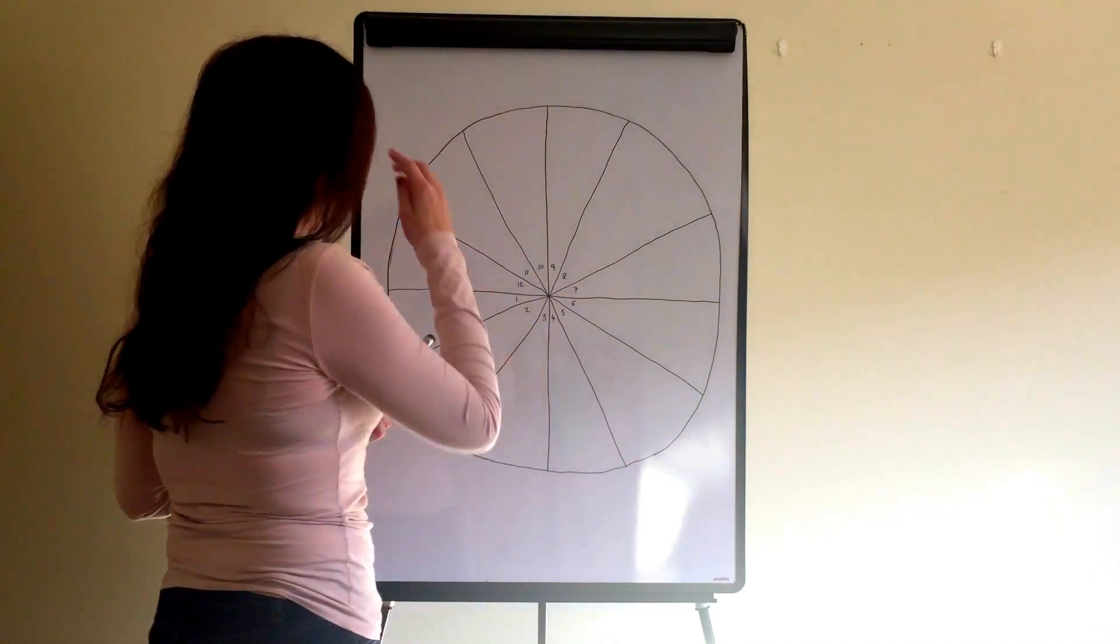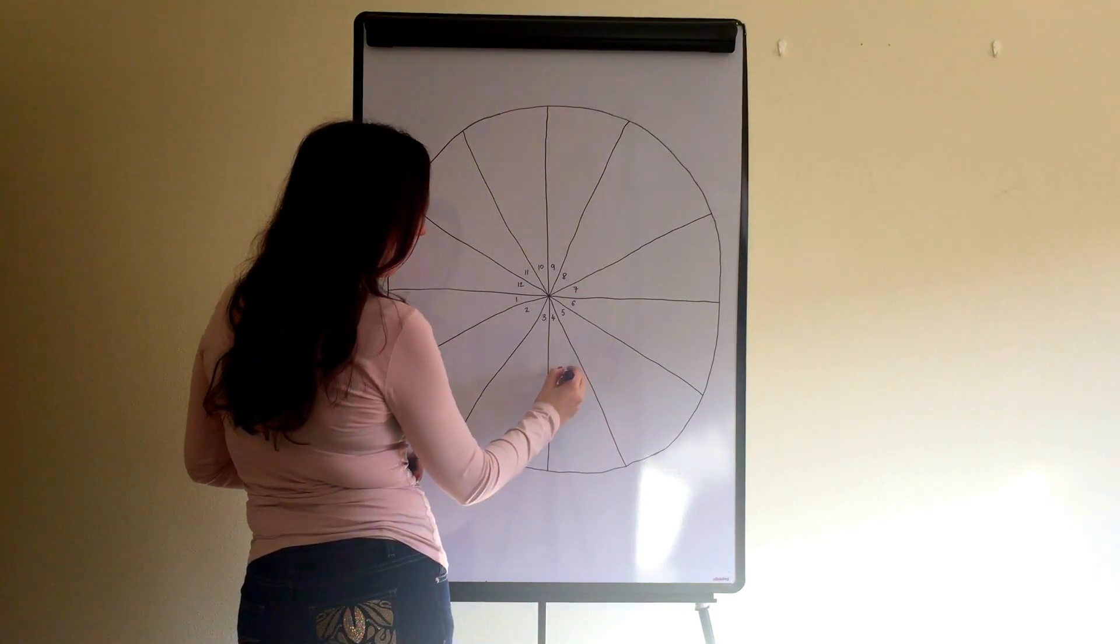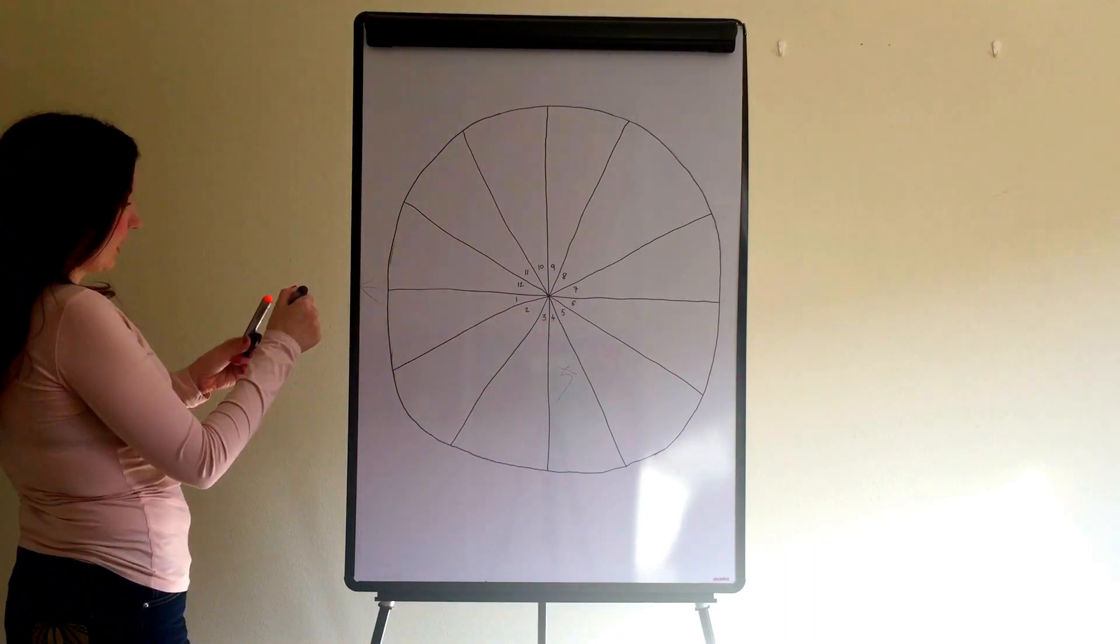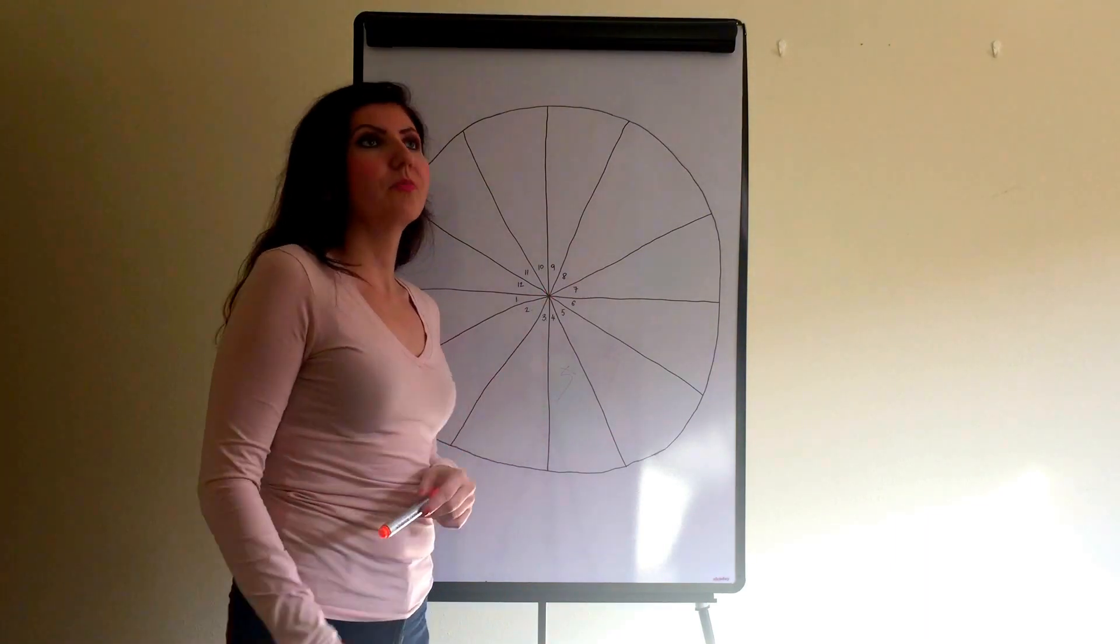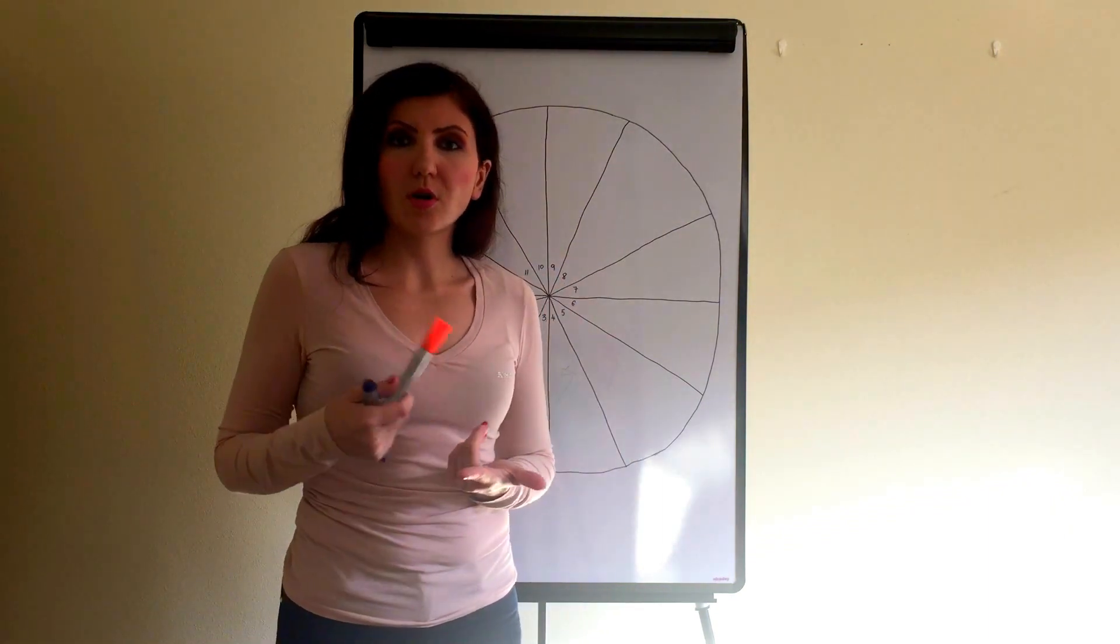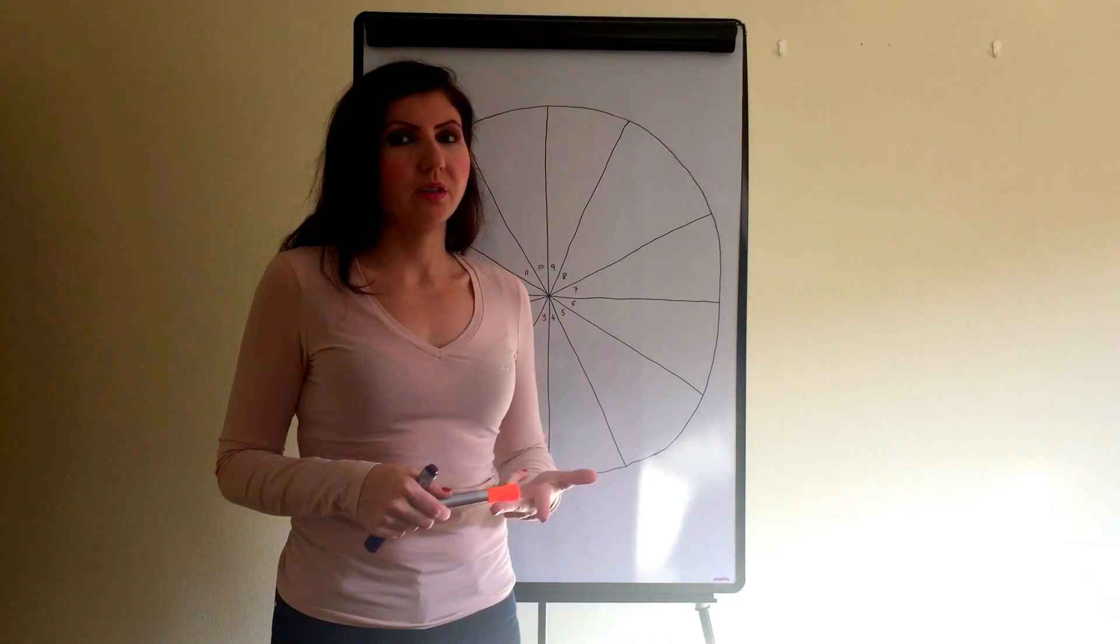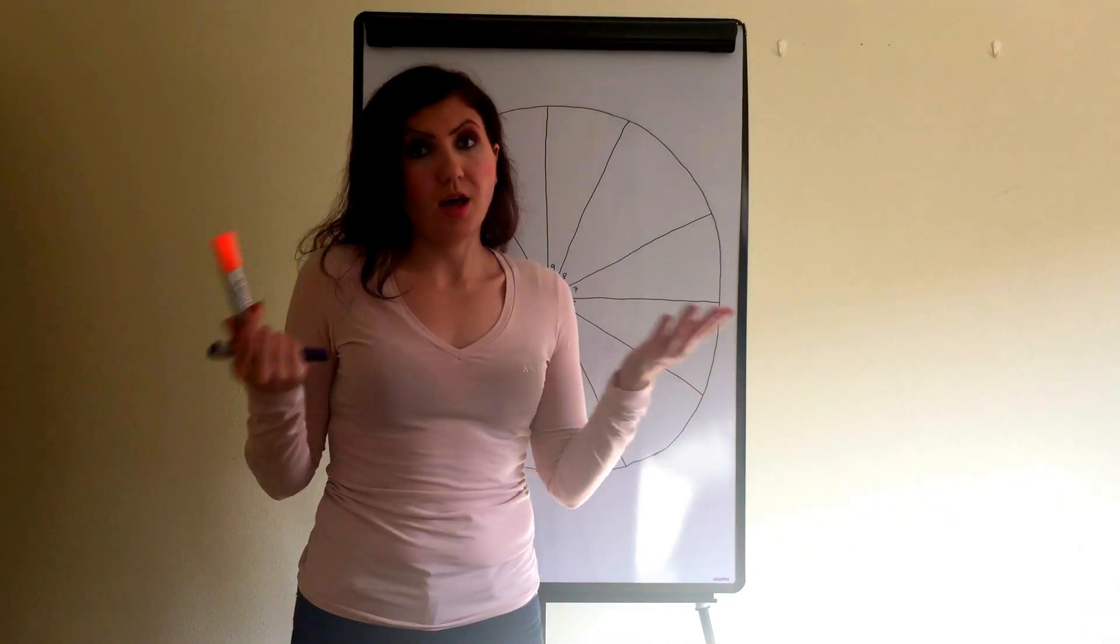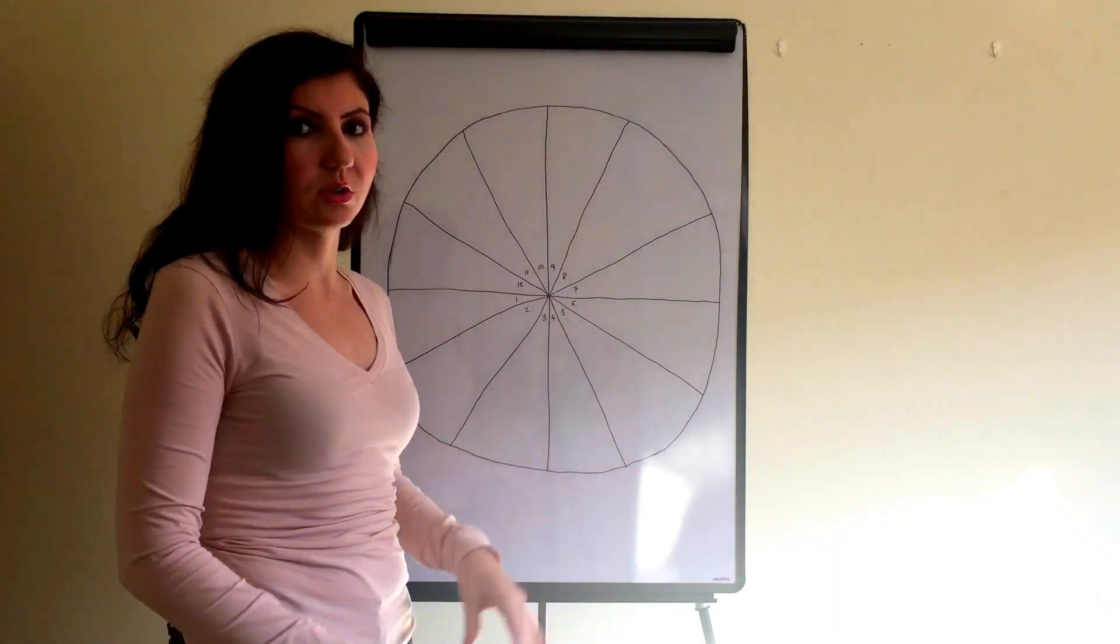For all Virgos, planet Saturn will be placed in your fourth house in 2017. If we count houses from the beginning, from the rising sign, this is actually the fourth house. And now, what does it mean for you? Fourth house is the house of your family. Actually, it's a house of your home. It's a house of your inner self, of your inner being. I have to say that this is very important house in astrology. In fact, all houses are important in their own way, but I have to say that this is a really important house.